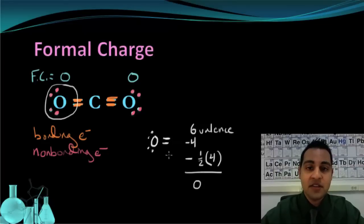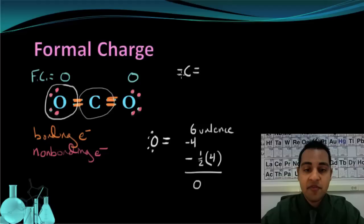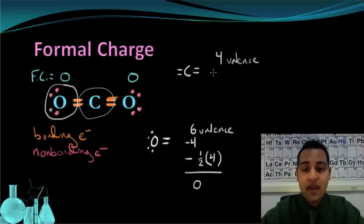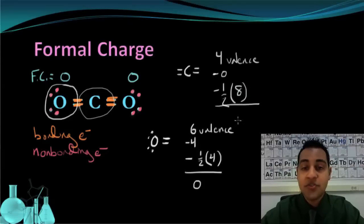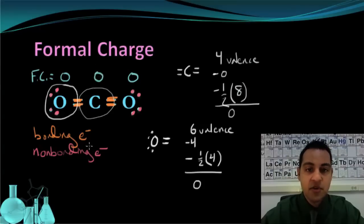We can do this same process for the middle carbon. This carbon has 2 double bonds, one in each direction, for a total of 4 bonds. It originally has 4 valence electrons. We subtract 0 non-bonding electrons and then subtract half of the 8 bonding electrons, which is 4. So the formal charge on this carbon is 4 minus 0 minus 4, which also equals 0.